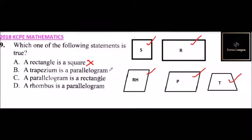A trapezium is a parallelogram. A trapezium has only a pair of two sides. That is, this is a trapezium. And a parallelogram has two pairs of parallel sides. So that's not correct.